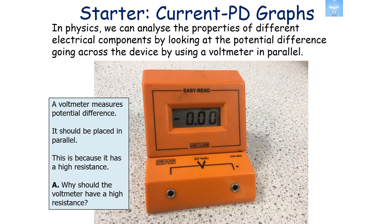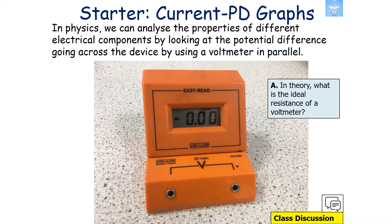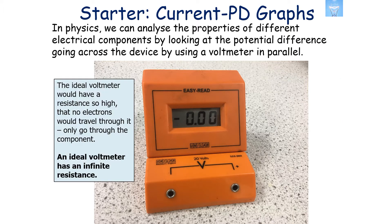A voltmeter measures potential difference and should be placed in parallel, because it has a high resistance. A voltmeter has a high resistance as it measures the change in energy electrons possess before and after a component — if the voltmeter had a low resistance, the electrons would go through the voltmeter and not the component. In theory, an ideal voltmeter would have a resistance so high that no electrons would travel through it.